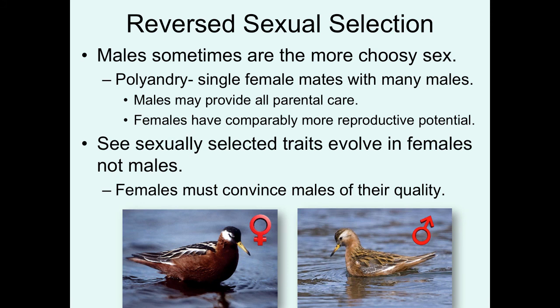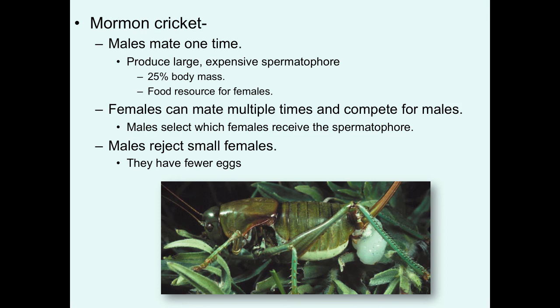The larger size and greater aggression is basically female-female competition — so it's reversed the typical pattern. We have female-female competition and male choice instead of female choice. Another example is Mormon crickets, where males mate only a single time because they can only produce one large, very expensive spermatophore representing about 25% of their body mass — it's both a source of sperm and a food resource for the females. Females can mate multiple times and compete for males and their resources. Males will reject small females because larger females have more eggs to produce, so males don't want to waste their spermatophore on small females.